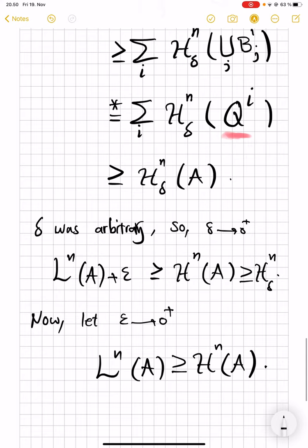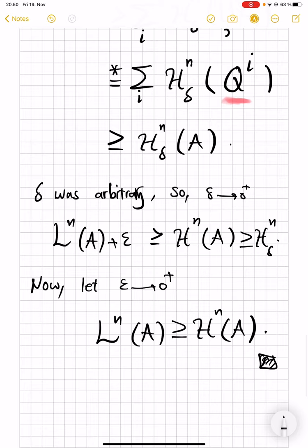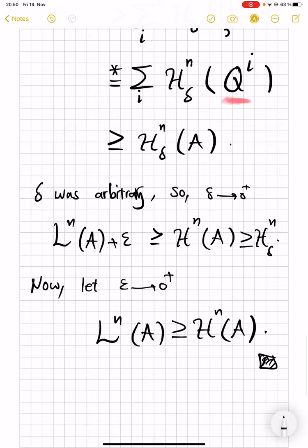The reverse had been proven already. And this finishes the beautiful theorem that outer Lebesgue measure agrees with the Hausdorff measure. Remember that if a set is measurable, the outer Lebesgue measure is just the usual Lebesgue measure. And in particular, for every Borel set, this is true.